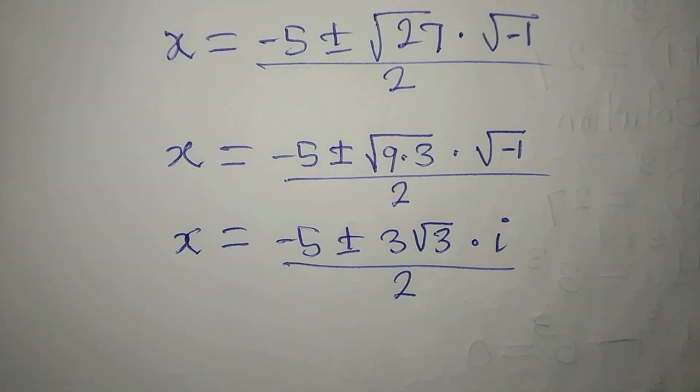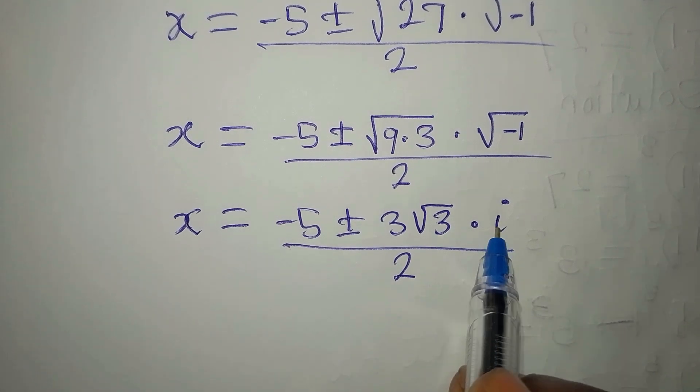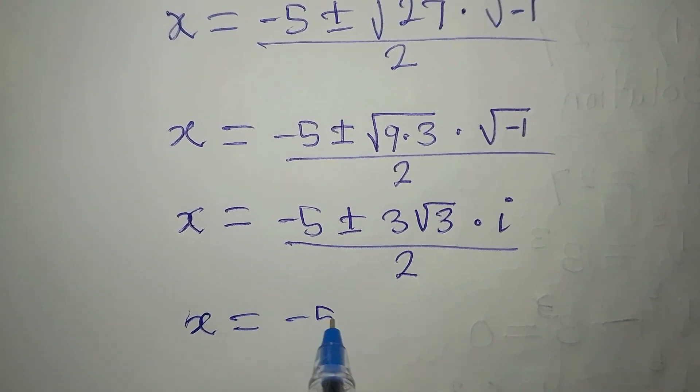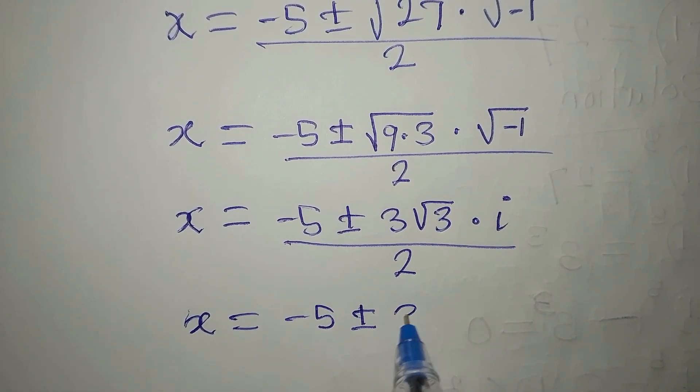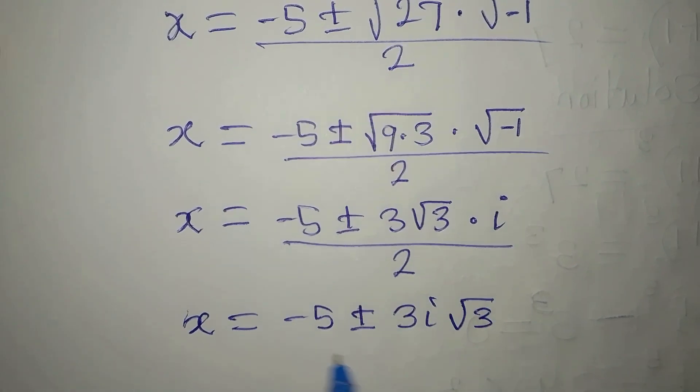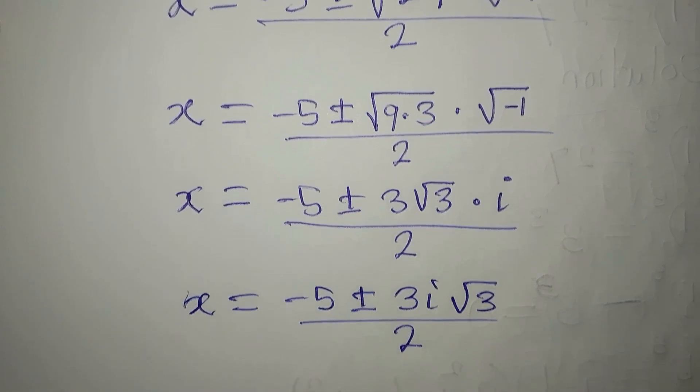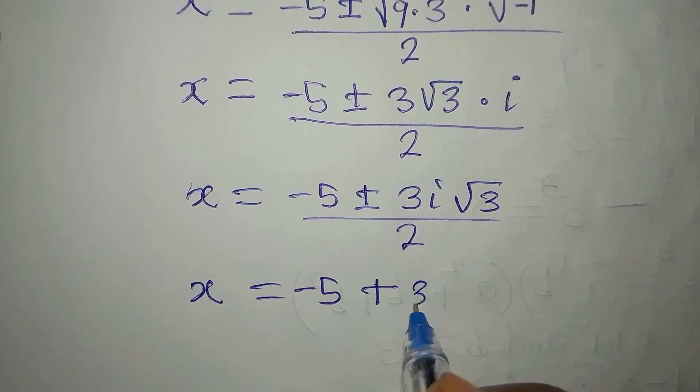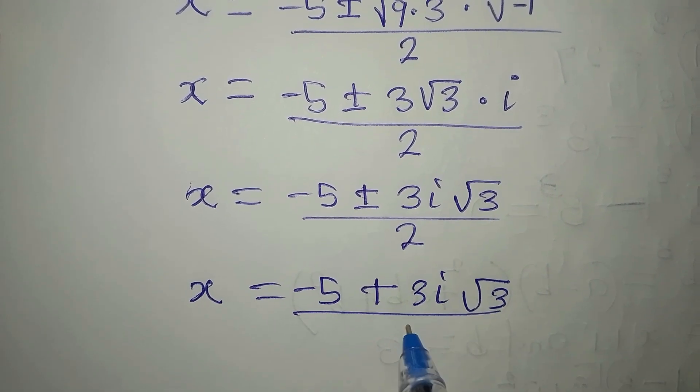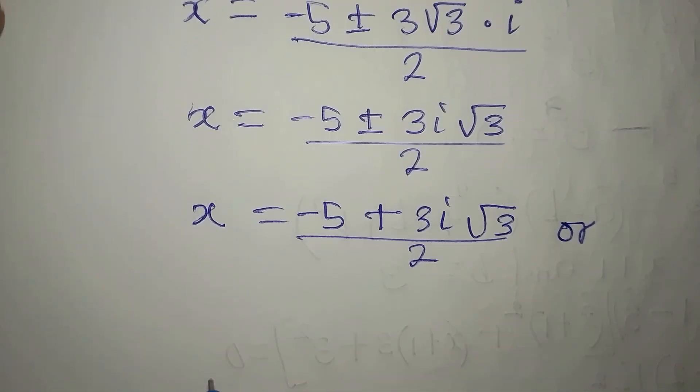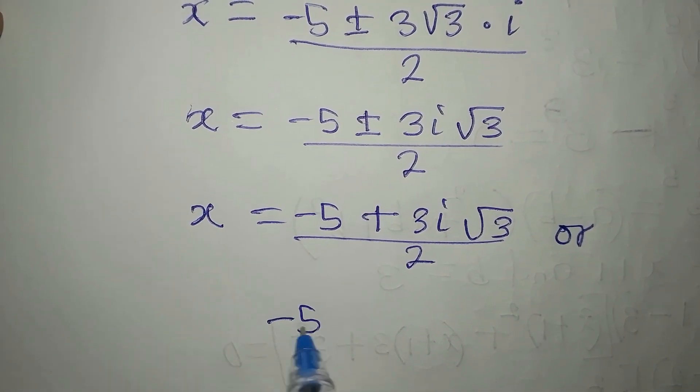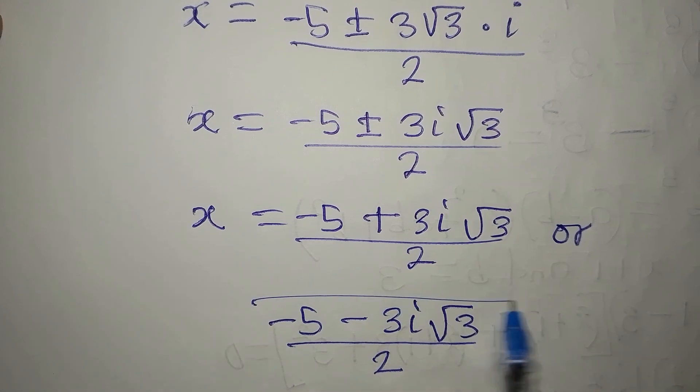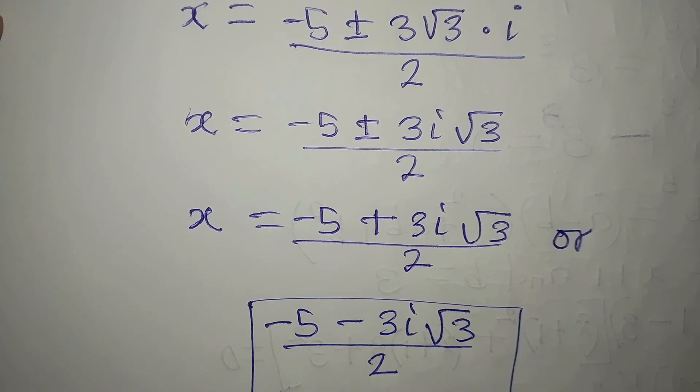To go ahead, we can rearrange this so that i multiplies 3. So our x will now be negative 5 plus or minus 3i root 3 all over 2. Or we have minus 5 minus 3i root 3 all over 2. So from here, we have the second value of x.